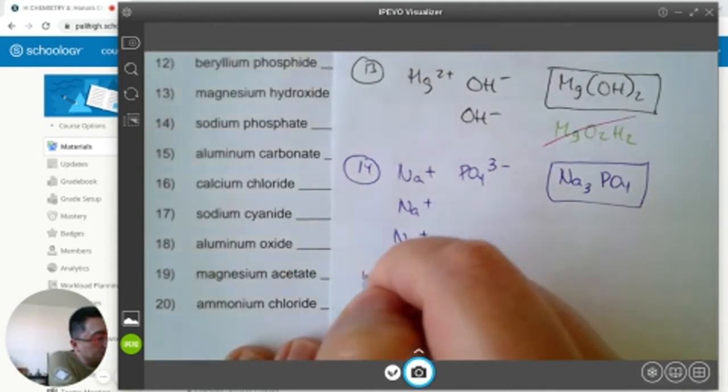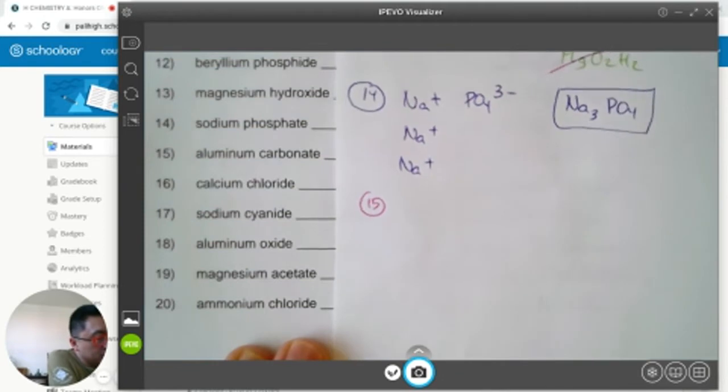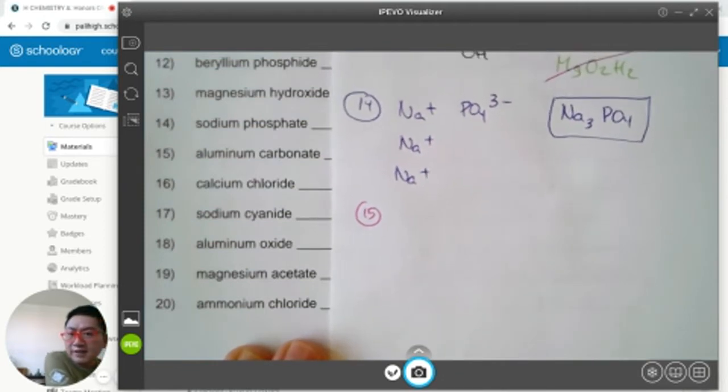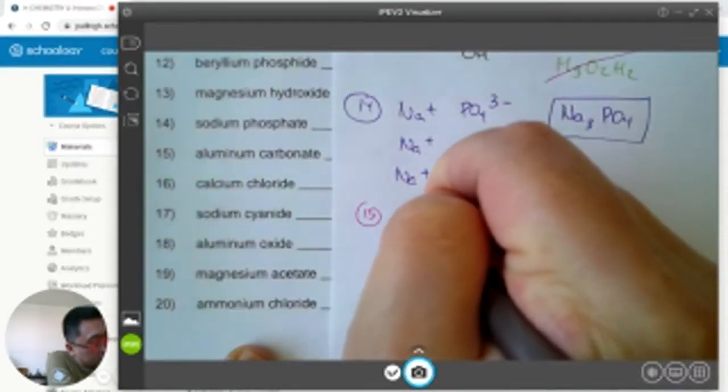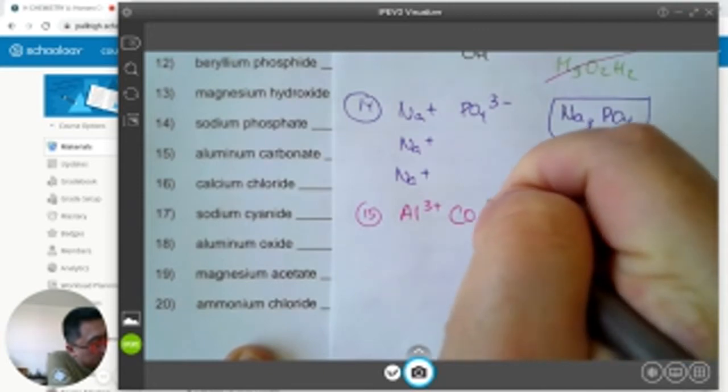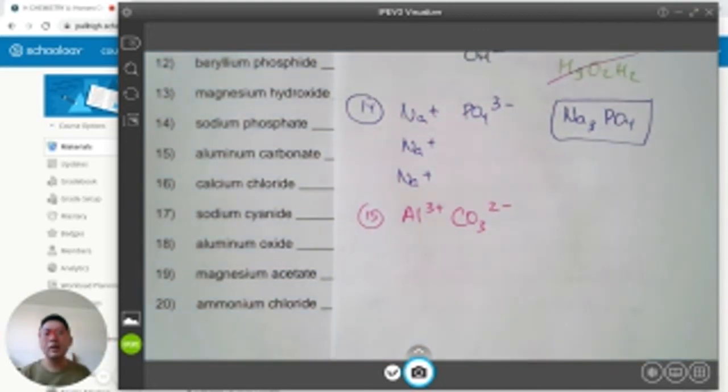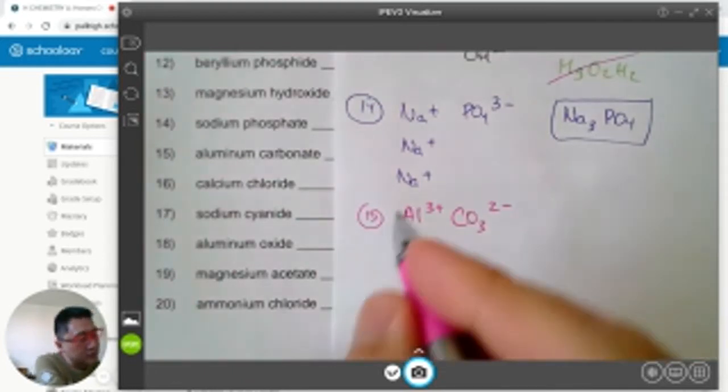Next one, question number 15. Aluminum carbonate. Aluminum is Al, its charge is positive 3. Carbonate is CO3, its charge is minus 2. Positive 3, negative 2 doesn't add up to 0. What is the least common multiple between 3 and 2? It's 6.